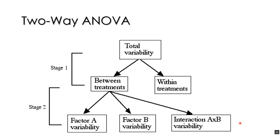On your source table, you will have a sum of squares and mean squares, and an F factor associated with factor A, factor B, and the interaction.